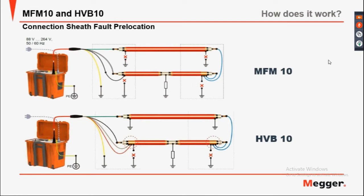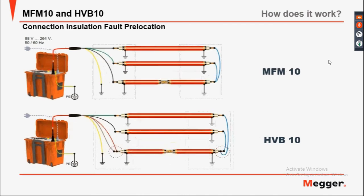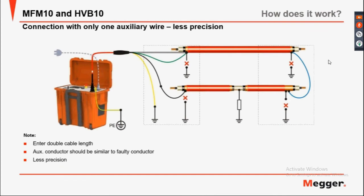Connection for sheath fault pre-location. Connection for installation fault pre-location — there is a difference between the MFM10 and the HVB in how you connect for a sheath fault pre-location. Connection with only one or zero auxiliary wires: note that you must enter double the cable length. The auxiliary conductor should be similar to the fault conductor, though this is less precise.